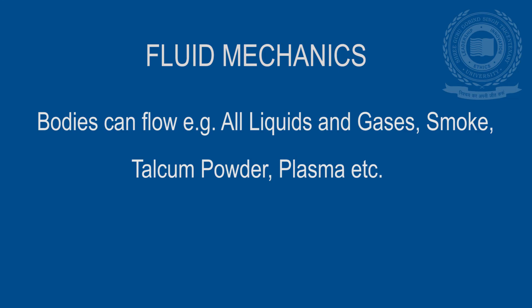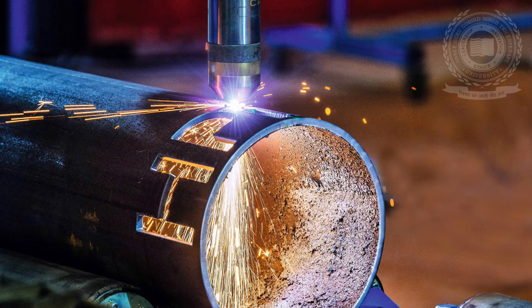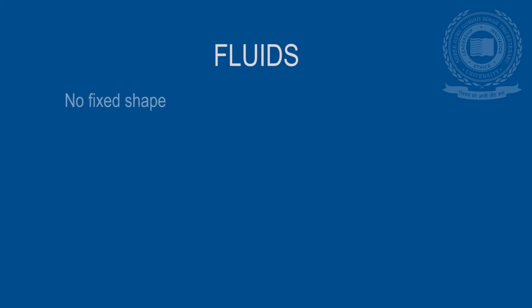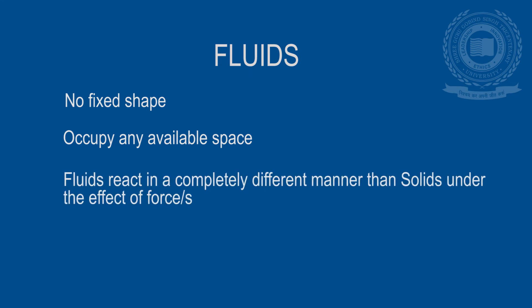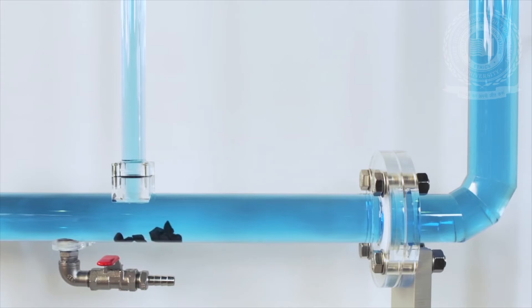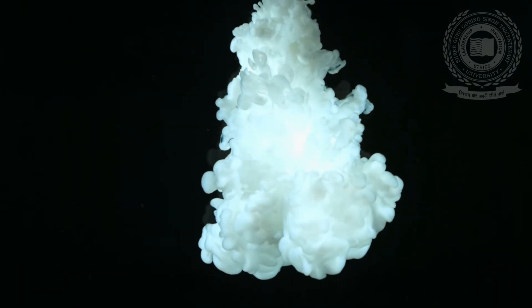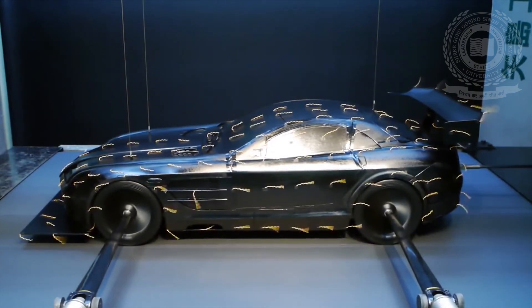In fluid body mechanics, we generally refer to bodies that can flow — that is, all liquids and gases, and some special cases like smoke particles, talcum powder, plasmas, etc. — as these bodies have no fixed shape and they tend to occupy any available space that is provided to them. Fluids react in a very different manner than rigid bodies under the effect of force. Some examples studied under fluid mechanics are water flowing in pipes, motion of smoke particles, and air movement over an automobile body structure.